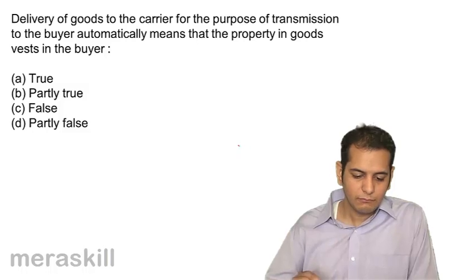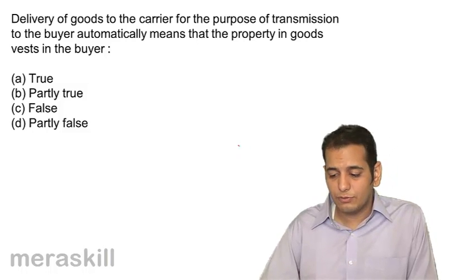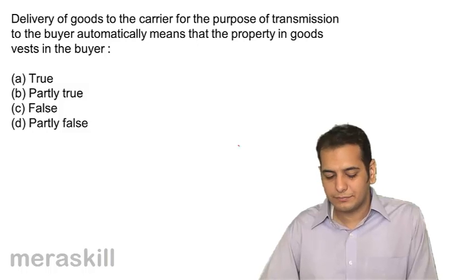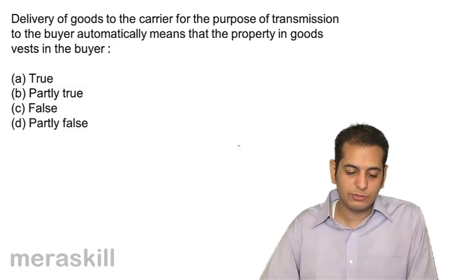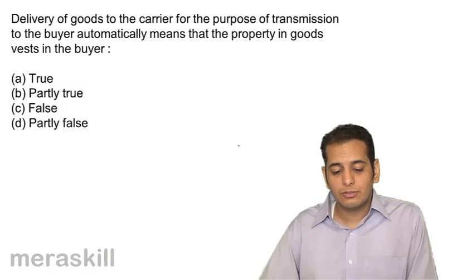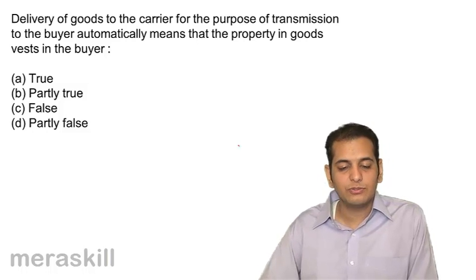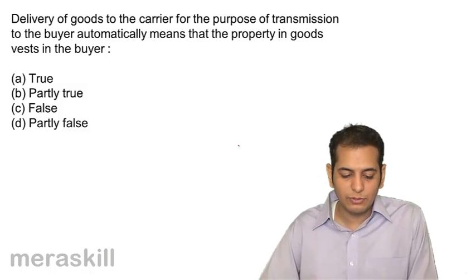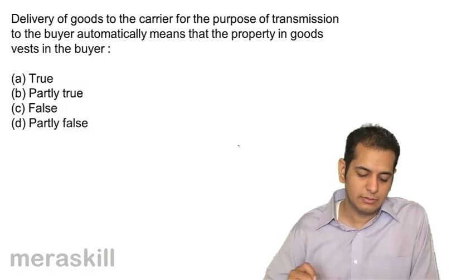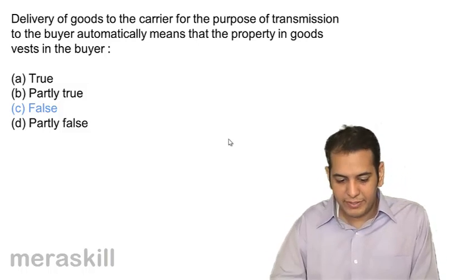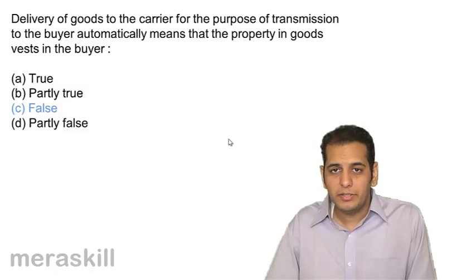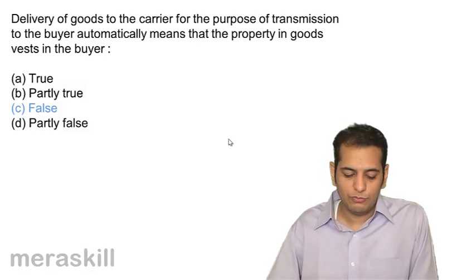Next: Delivery of goods to the carrier for the purpose of transmission to the buyer automatically means that the property in goods vests in the buyer — (a) true, (b) partly true, (c) false, (d) partly false. The answer is false. This does not mean that property in goods automatically vests with the buyer; the seller may make a conditional delivery and reserve the right to disposal of goods.